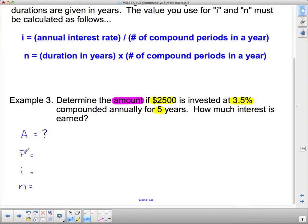And we're being asked for, and I'm going to do this in pink, the amount. So since we're being asked for the amount, I'm going to put a question mark beside the A. Now, principal is the initial amount invested, so in this case, it's $2,500. Now, I is the interest rate as a decimal, 0.035, but we have to divide that by the number of compound periods. Well, this is being compounded annually, so there's only one compound period per year. So that's just going to be 0.035, because dividing by one does nothing.